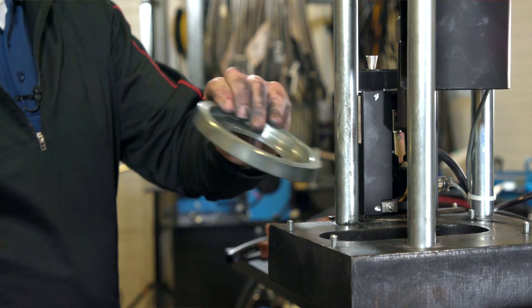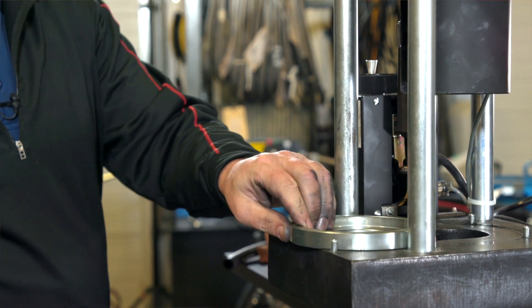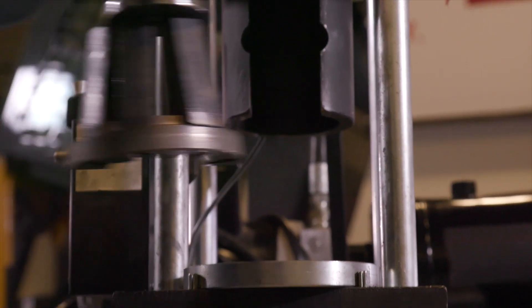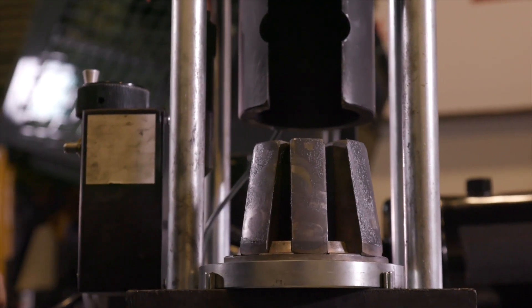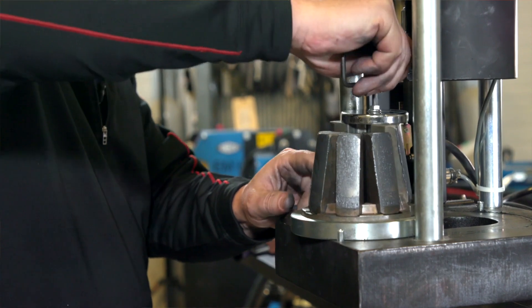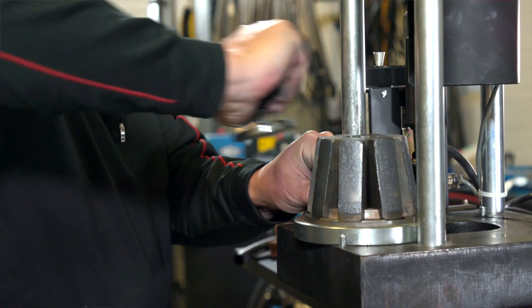First, place the die backup ring on the front of the crimper base plate. Then select the proper die set for the hose and coupling. Using the die magnet supplied with the crimper, insert the proper die set one half at a time onto the ring.